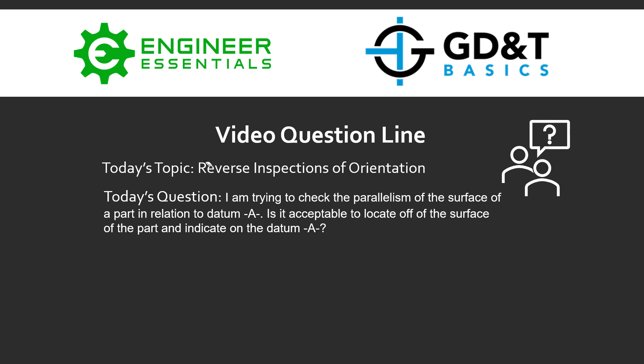So the question submitted was: I'm trying to check the parallelism of the surface of a part in relation to datum A. Is it acceptable to locate off the surface of a part and then indicate on the datum A itself?